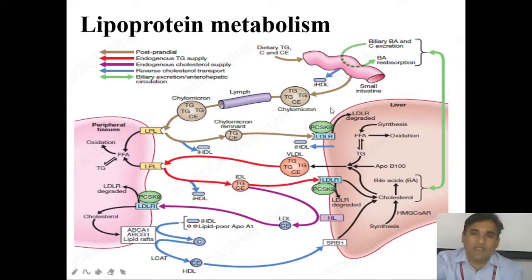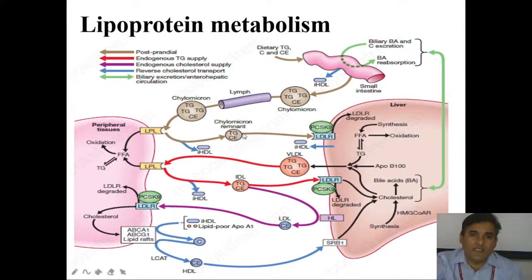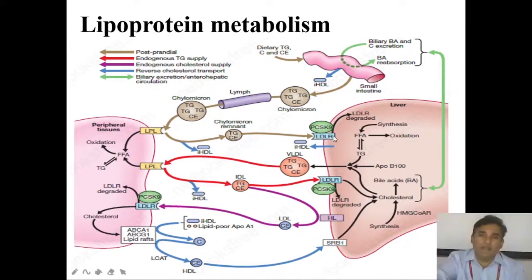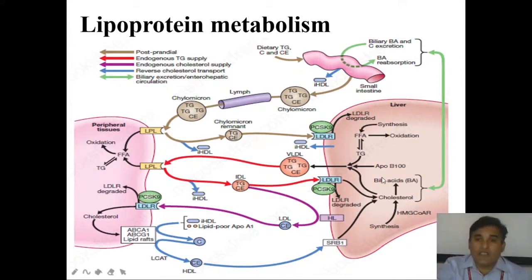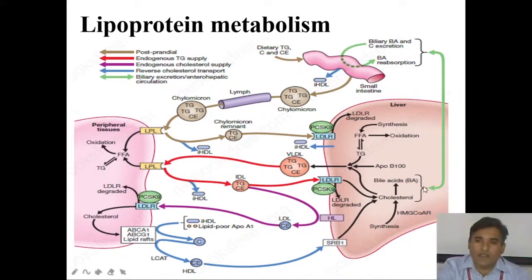Dietary cholesterol, after digestion, gets converted into chylomicrons. The chylomicron gets absorbed through the lymph and in the systemic circulation, lipoprotein lipase degrades the triglycerides and cholesterol esters. The remaining chylomicron remnant is the major source transported to the liver by the LDL receptor. Whatever cholesterol or triglycerides are synthesized by the liver get reabsorbed by the intrahepatic circulation in the form of bile, and all these together produce VLDL.